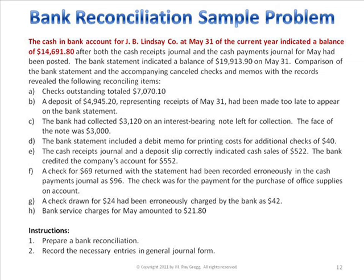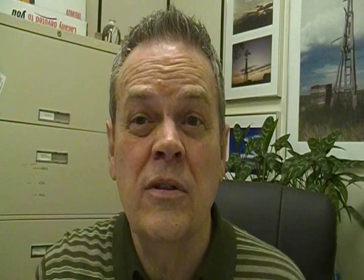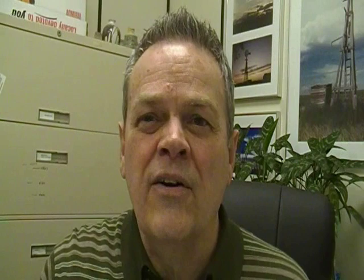In the opening paragraph, the balance according to the company's records is $14,691.80. That goes on the company's side as our beginning balance. We're comparing that with the balance according to the bank statement, which the opening paragraph says is $19,913.90. That goes on the bank's side. The bank is on the left and the company's on the right — that's just how I wrote it. So we've got these two balances that don't agree, and our job is to get them to agree and explain why they don't.